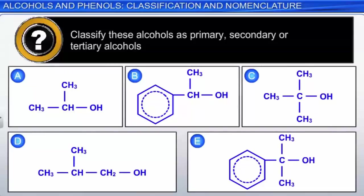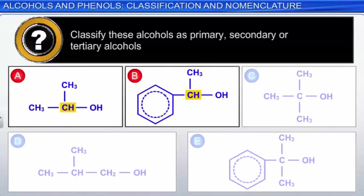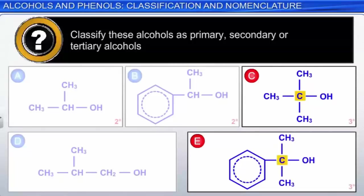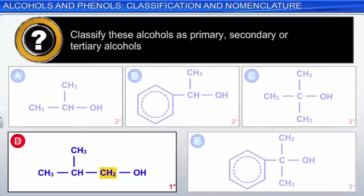Here is a practice problem: classify these alcohols as primary, secondary, or tertiary. Molecules A and B are both secondary alcohols — in both, the carbon bonded to the hydroxyl group is attached to two other carbons. Molecules C and E are tertiary alcohols, where the hydroxyl-bonded carbon is bonded to three other carbons. Molecule D is a primary alcohol, with only one carbon-containing group attached to the hydroxyl-bonded carbon.